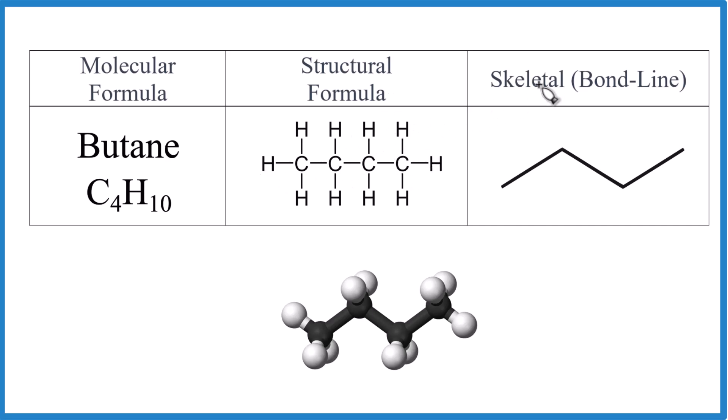When we get to the skeletal formula, this is really stripped down. We have the carbons: one, two, three, four. So on the ends and where things bend. And it shows us the shape. We start to see some of the geometry. The hydrogens, each carbon would have four hydrogens, but we don't write the hydrogens and we don't even write the carbons. Organic chemists look at this and they know this is butane.